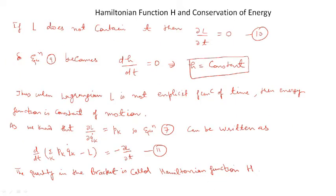Now, if the Lagrangian of the dynamical system does not contain time explicitly, then ∂L/∂T = 0. Because dh/dT = −∂L/∂T, it follows that dh/dT = 0 as well, which means h is constant. So when the Lagrangian does not contain time, the energy function is a constant of motion.